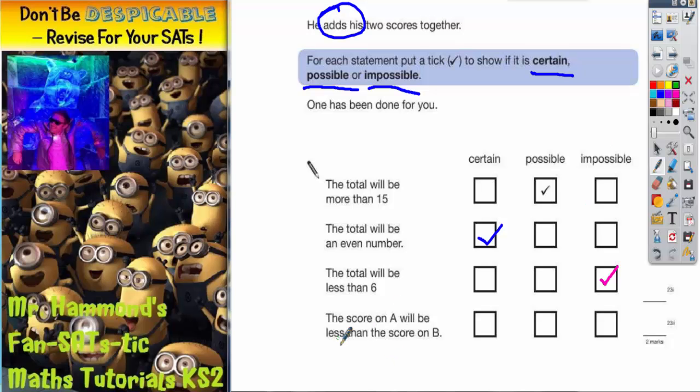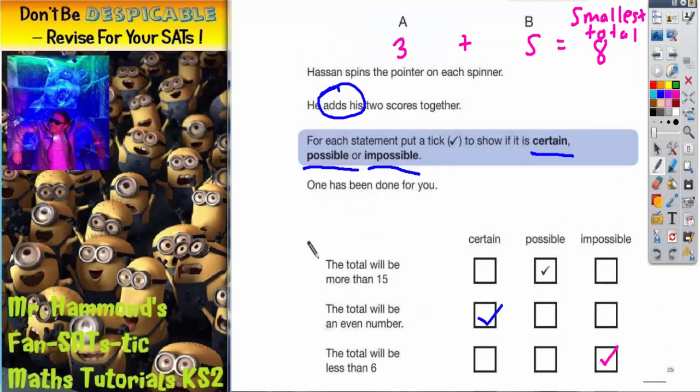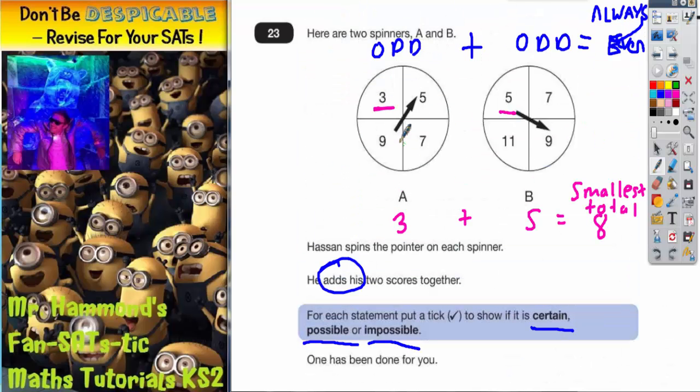The final statement, the score on A will be less than the score on B. Well can the score on A ever be less than the score on B? Yes it can. If the score on A is 3 or 5, then that is definitely less than 7, 9 or 11.